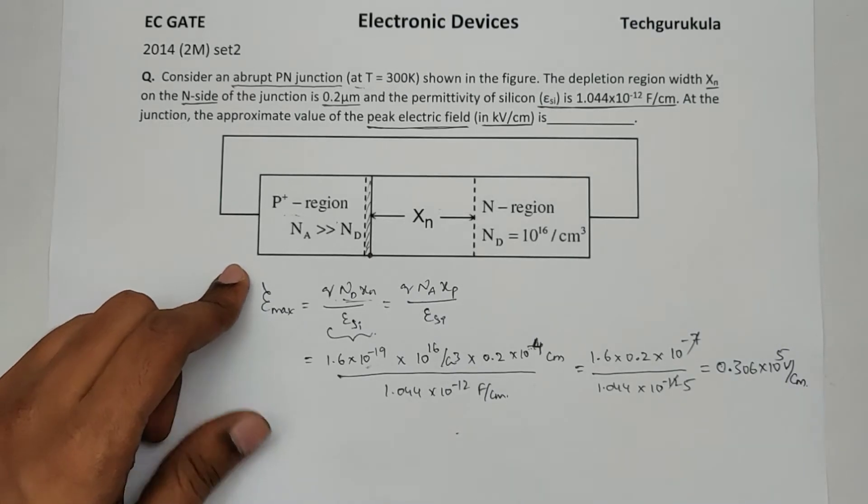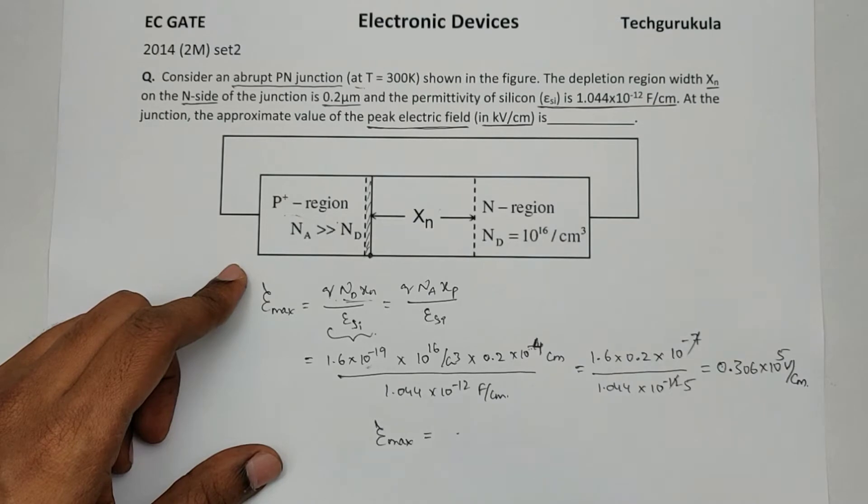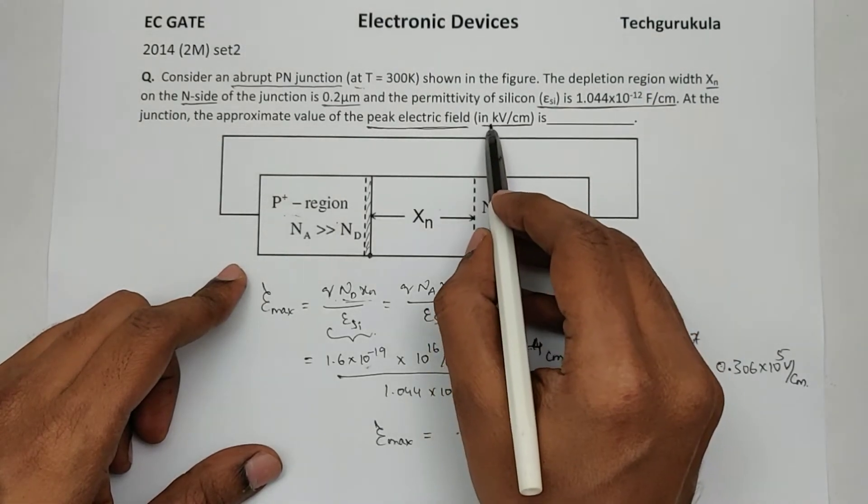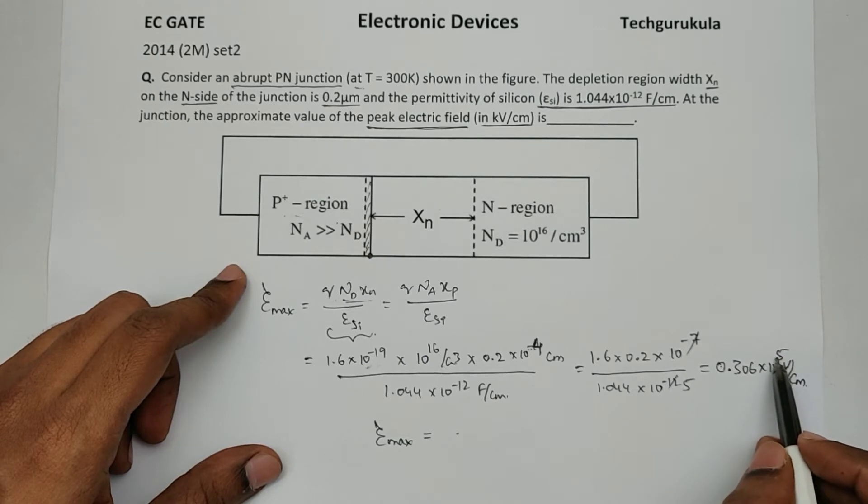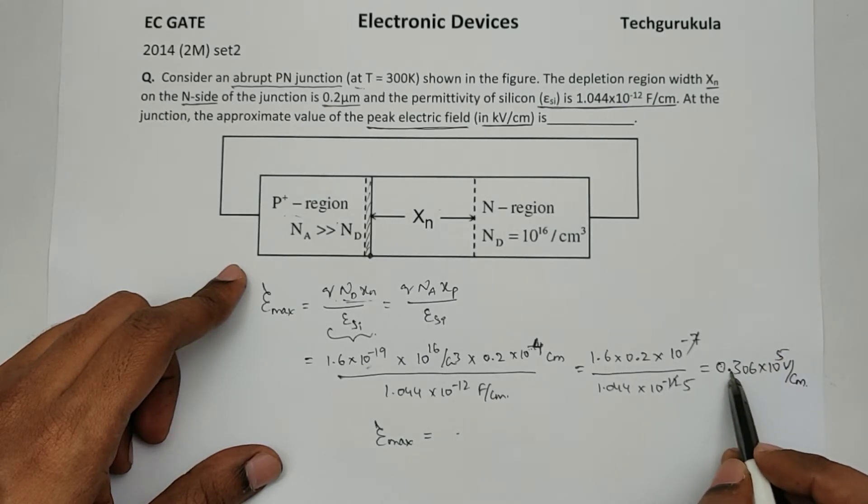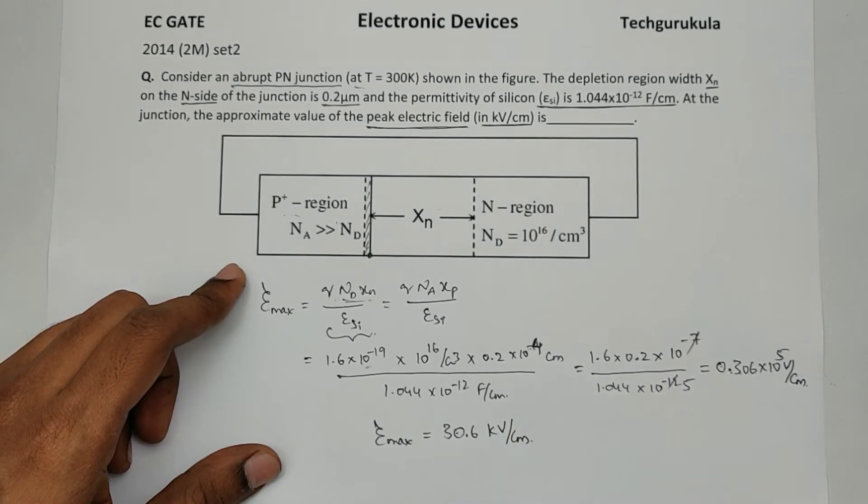Now if we rewrite this, E_max is equal to, we have to find the value in kilovolts per centimeter. Okay, so this is 10^5, I'll take 10^2 and change the decimal so it becomes 30.6 kilovolts per centimeter.